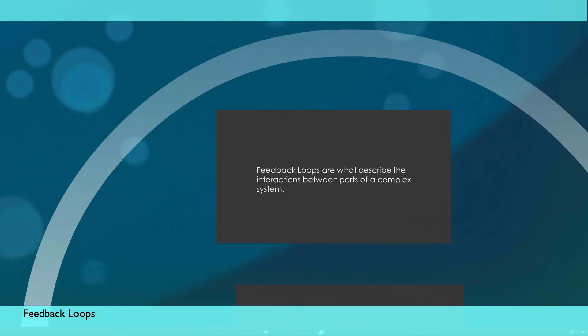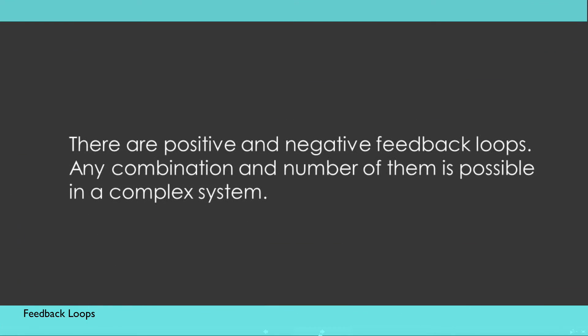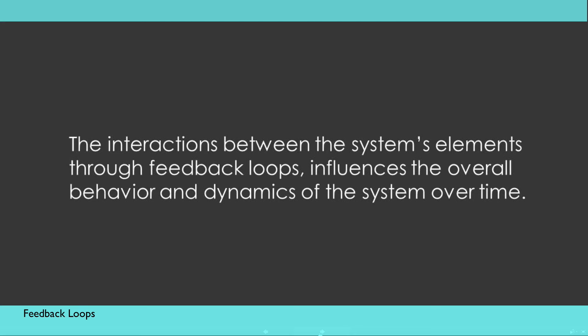We capture in learning from this model, we can say that feedback loops are what describe the interactions between parts of a complex system. There are positive and negative feedback loops. Any combination and number of them is possible in a complex system. The interactions between the systems elements through feedback loops influences the overall behavior and dynamics of a system over time.